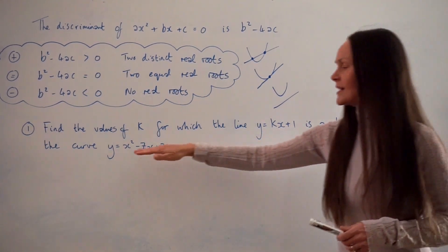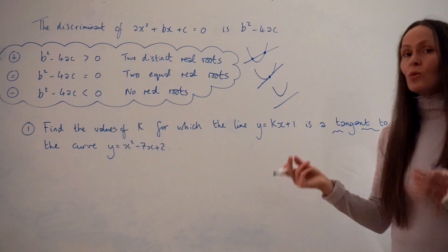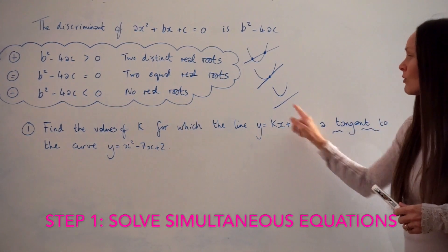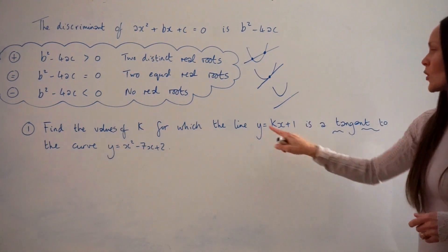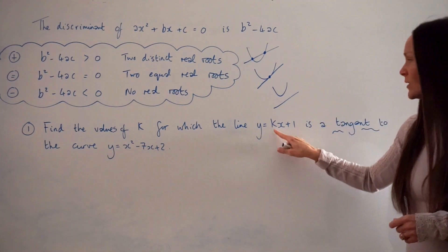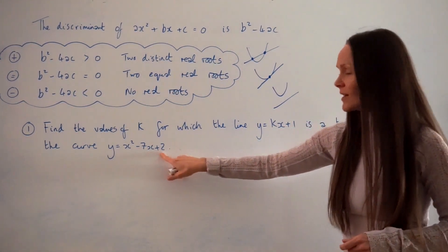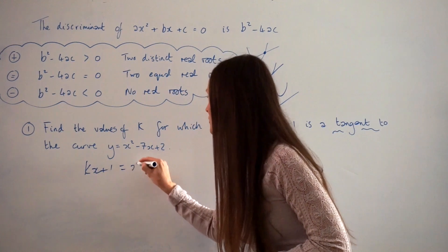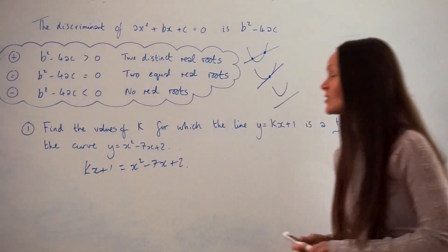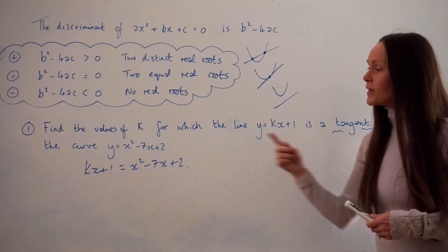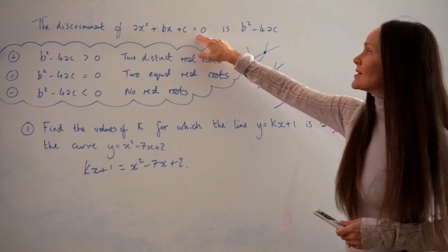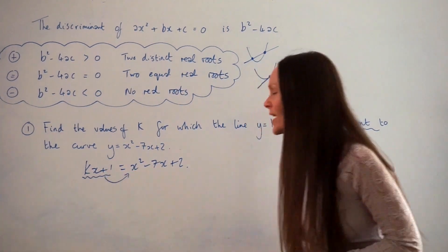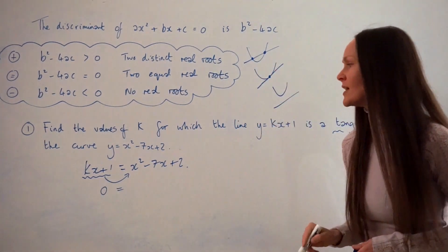Here's our straight line equation, and here's our equation of the curve. If we're trying to find the coordinates of the point of intersection, we solve the simultaneous equations. Both equations are already rearranged so that y is the subject, which is nice. Since y equals y, we know that kx plus 1 has to equal x squared minus 7x plus 2. So we write: kx plus 1 equals x squared minus 7x plus 2. Now I have to rearrange this equation so that it equals zero before I can write down the discriminant.